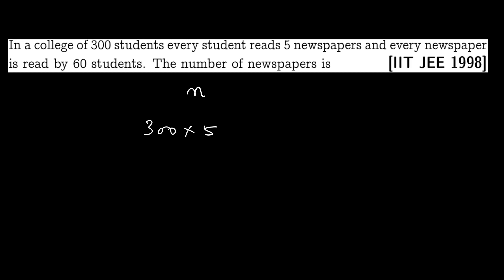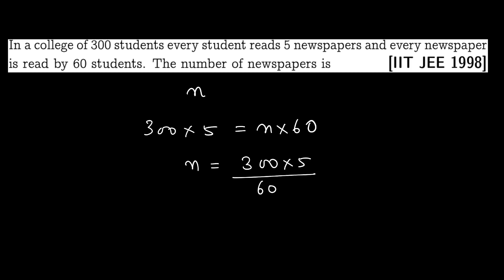The random equation gives us the total number. 300 × 5 divided by 60 — the answer is 25. So N equals 25 newspapers.